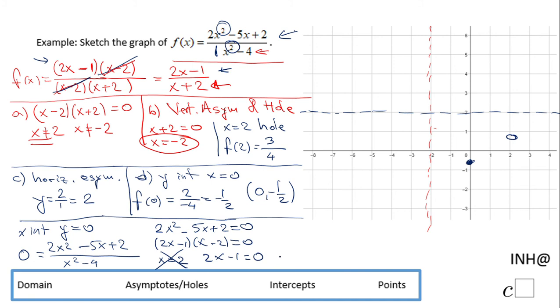That will give us x equals 1 half. x is 1 half, y is 0, so this is gonna be this point.